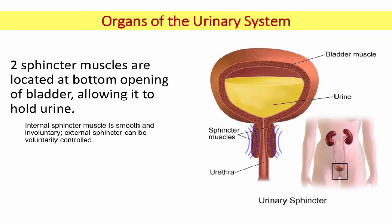If we look at the bladder, there are two sphincter muscles at the base of the bladder in both men and women. The inner one is smooth muscle and the outer one is skeletal muscle. The bladder itself is a muscular organ with a lot of smooth muscle, and embedded in the lining of the bladder are stretch receptors. Those stretch receptors communicate with the nervous system and tell it that the bladder is being distended, which leads to a signal to relax the bladder sphincters.